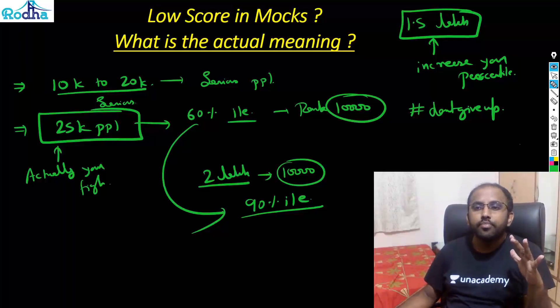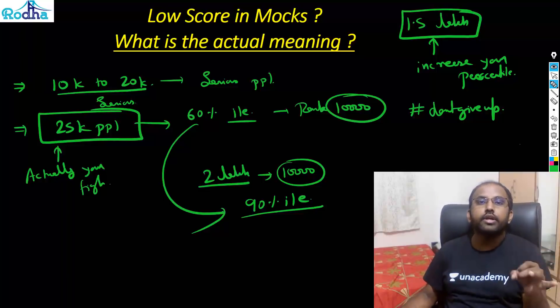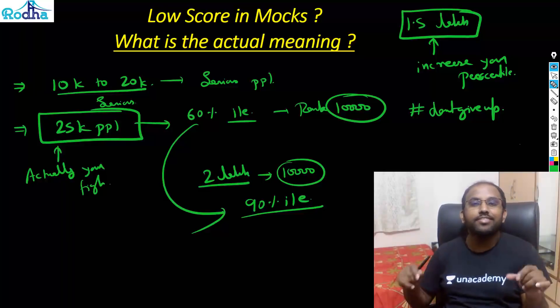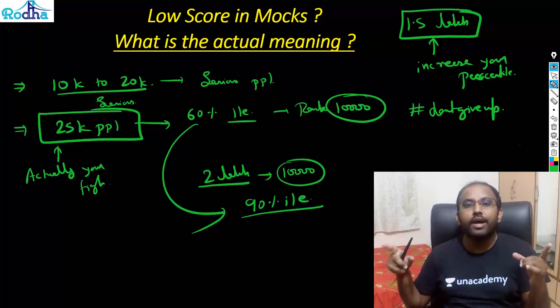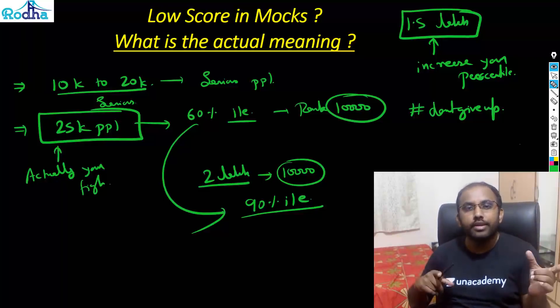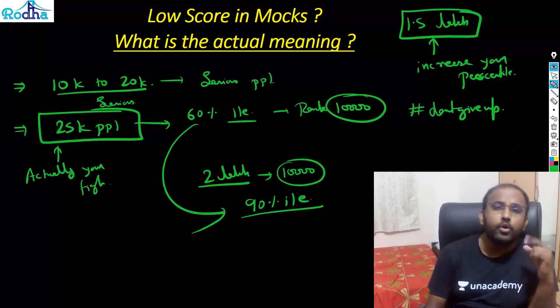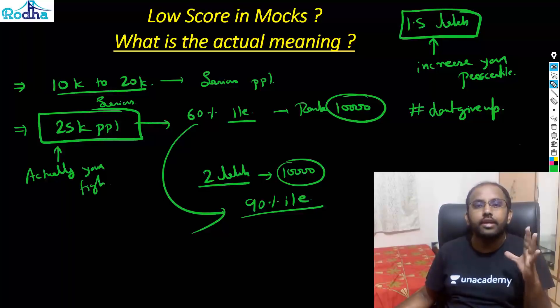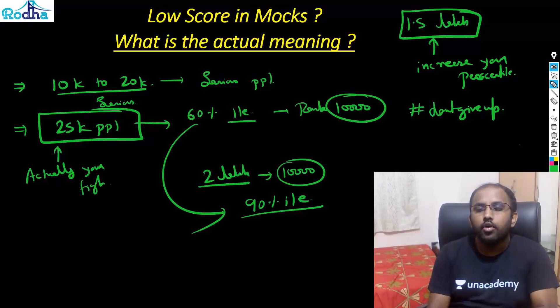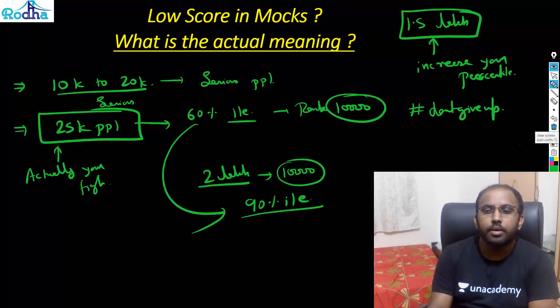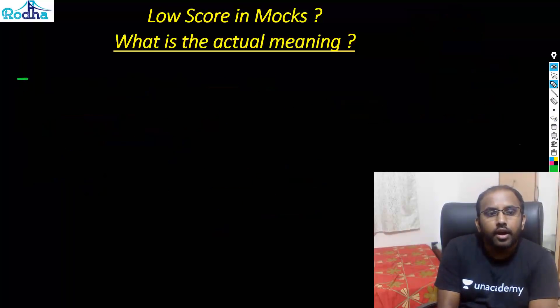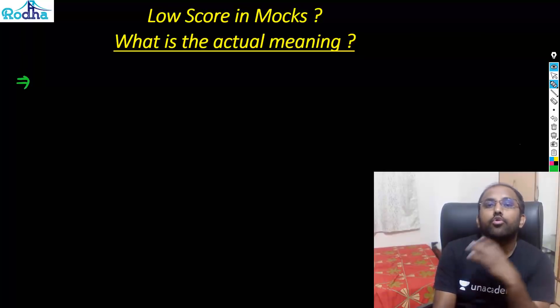So first thing is very important that those 1.5 lakh people you don't have that competition actually. They are just sitting to increase your percentile. So make sure that you study hard and you revise multiple times such that you are not sitting in CAT to increase somebody else's percentile. Those 1.5 lakh people should sit in CAT to increase your percentile. That's how you should actually study for CAT.